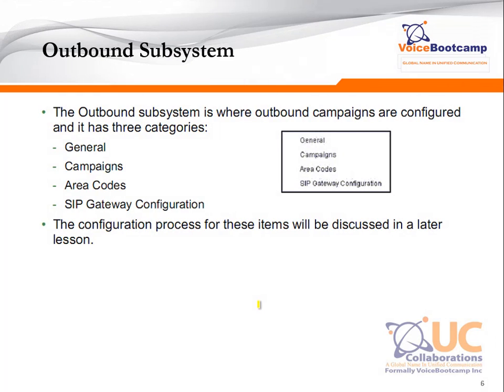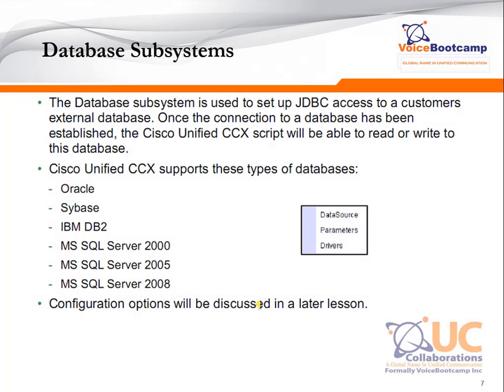The outbound subsystem is where the outbound campaigns are configured, and it has three categories: general campaigns, area code, and SIP gateway configurations. We will customize this when we show you the outbound subsystem configuration later in this course.